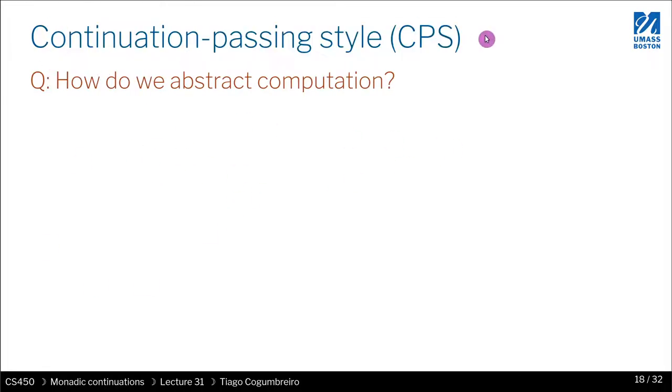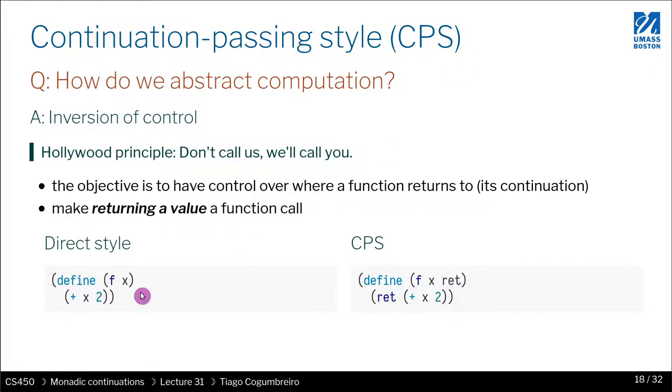So what is continuation passing style? Continuation passing style asks the following question: how do we abstract computation? And as we know, it's with a function. So how do we abstract a continuation by using a function? Well, the idea is that we want to be able to control the control flow. Because we need to control the control flow, the idea is that returning, so signifying the end of execution of something, should not be done directly by the function, but instead it should be delegated to another function, outside of that. What does that mean in practice?